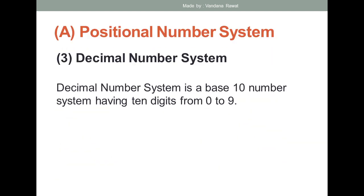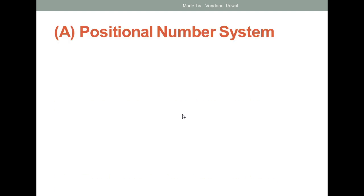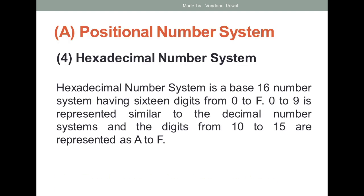The next type of number system is the decimal number system. Decimal number system has a base of ten and it has ten digits. The digits start from zero up to nine.